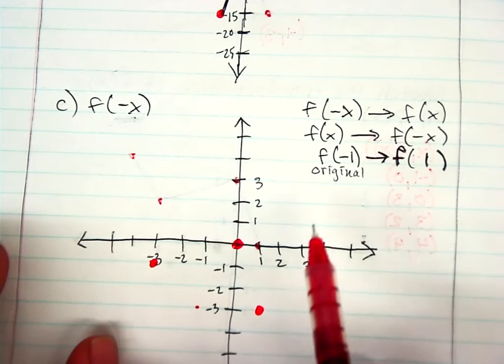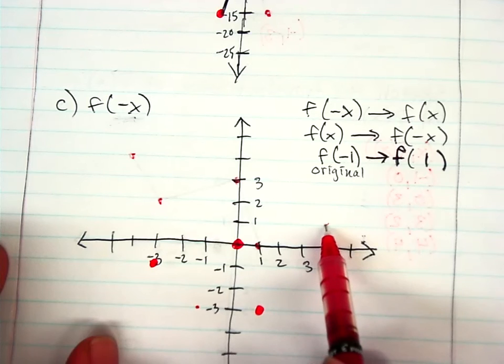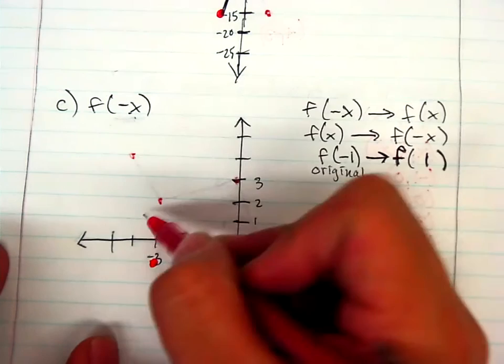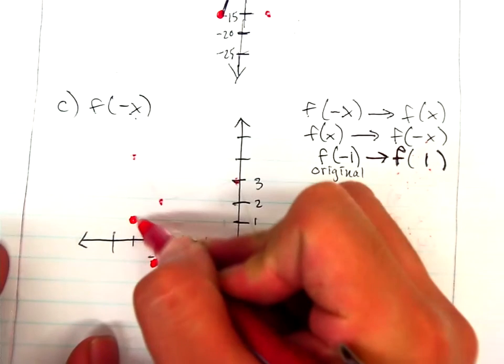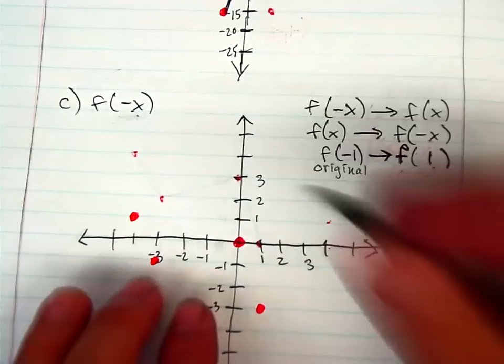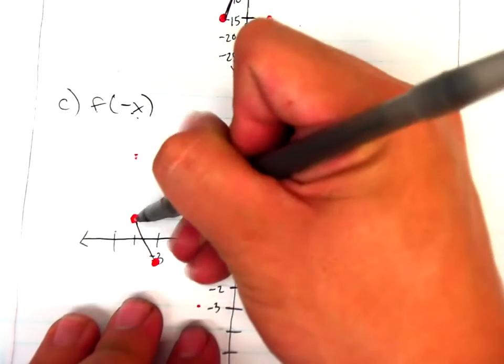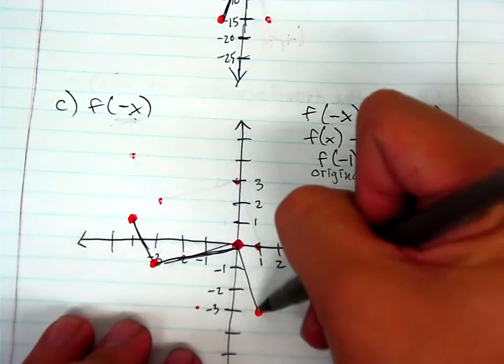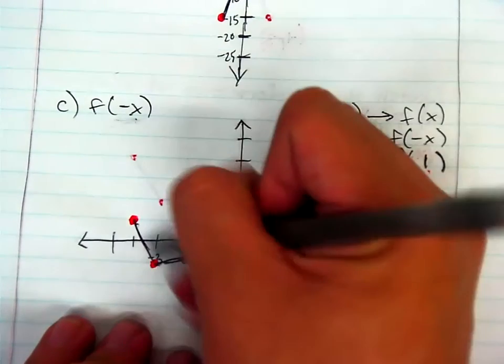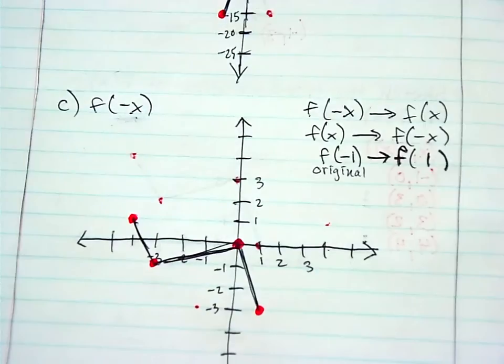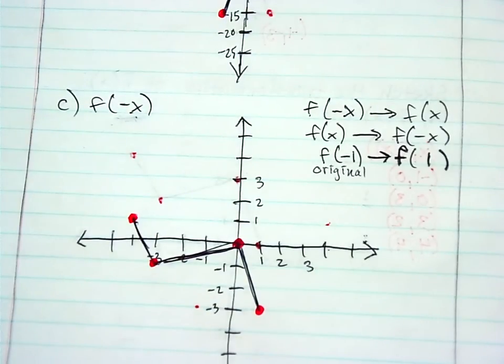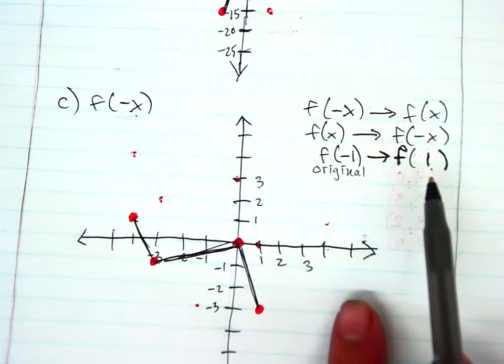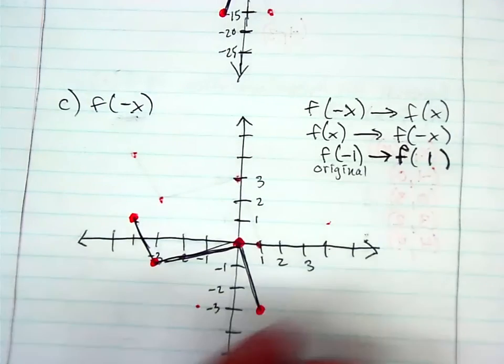And then our final one, (4, 1), now becomes (-4, 1). Let's go ahead and connect those. And now this function, which is f(-x), is a reflection of the original function across the y-axis. So that's pretty much what f(-x) is telling you. And if I have time, I'm going to go back to this to try to make it a little more clear. It might even help if I do example D. So let's go ahead and go to that last one.